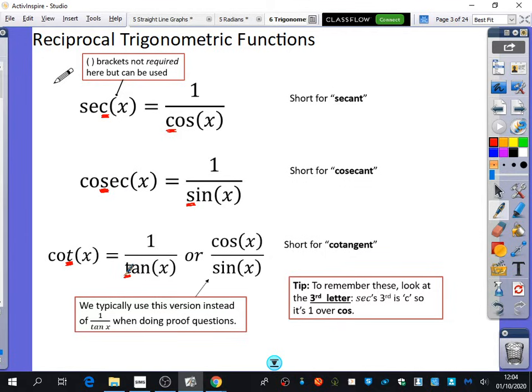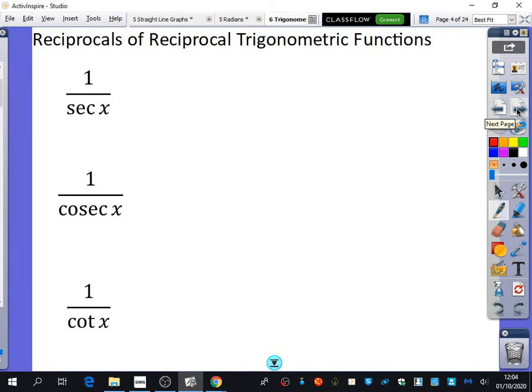Now, I'm wondering if we can think about the reciprocals of the reciprocal trigonometric functions. So on this next page, I'm going to do the reciprocals of the reciprocal functions. What do we think the reciprocal of 1 over sec x is? Yeah, it's cos x. 1 over 1 over cos x is actually telling you to take the reciprocal of the reciprocal, which gets you back to the original function, which is just going to be cos x.